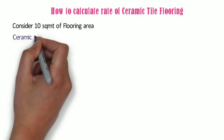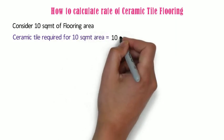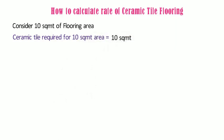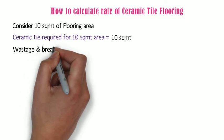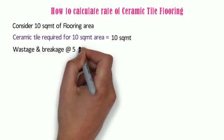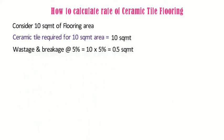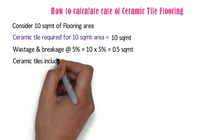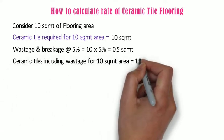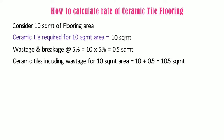Ceramic tile required for 10 square meter area is equal to 10 square meters. For ceramic tiles, the wastage and breakage factor is 5%, so 10 x 5% is equal to 0.5 square meter. Ceramic tiles including wastage for 10 square meter area shall be 10 + 0.5 = 10.5 square meters.